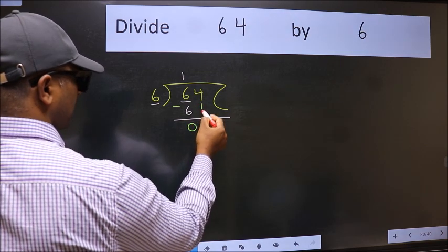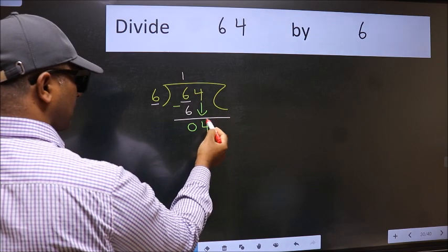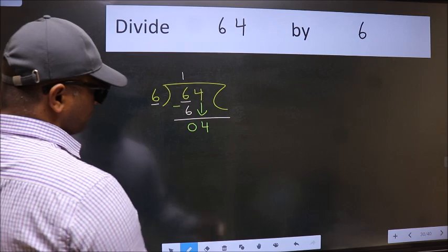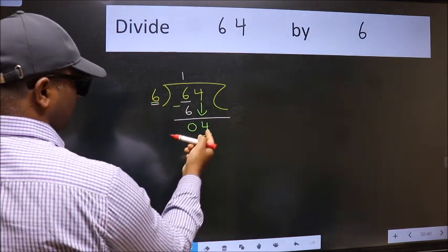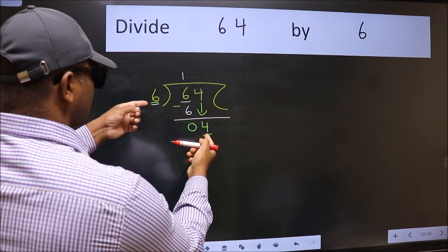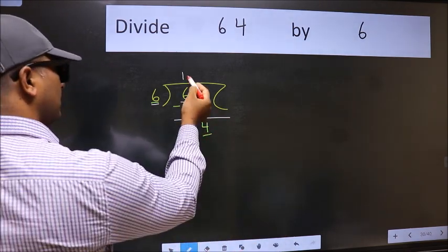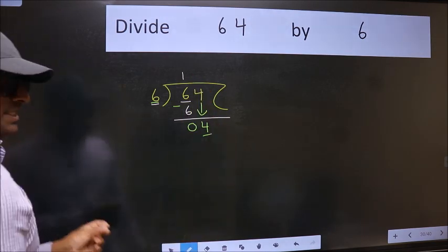After this, bring down the beside number. So 4 down. After this step, the mistake happens. And the mistake is this: here we have 4 and here 6. 4 is smaller than 6.